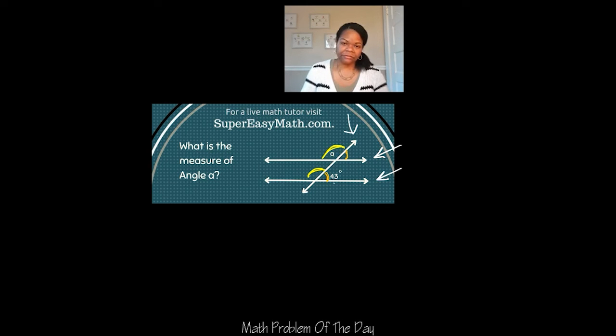Now, if we consider the fact that a straight line has an overall angle measure of 180 degrees, I know that I can take 180 subtract 43, I get 137 degrees, and I know that 137 degrees is the angle measure over here.